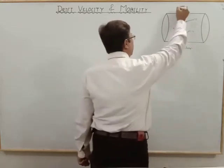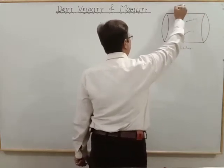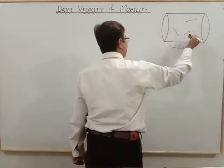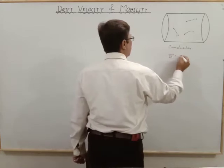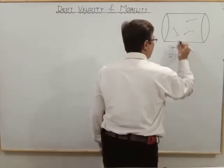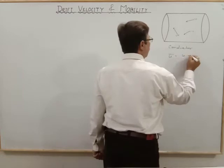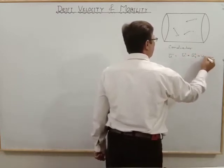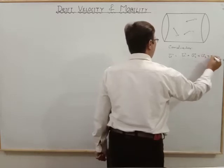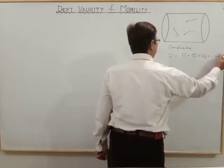So, as you can see, the initial velocity of all these electrons, which we take, that initial velocity u is equal to zero. We can take all n electrons, so that is u1 vector plus u2 vector plus u3 vector, plus up to un vector.